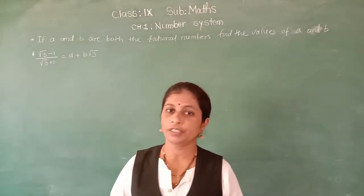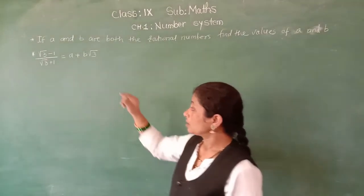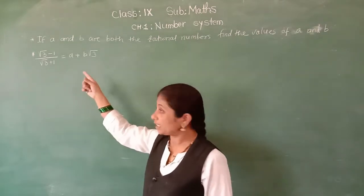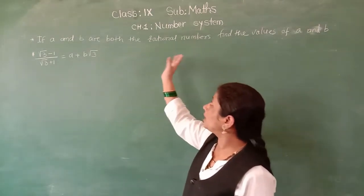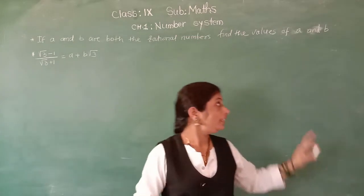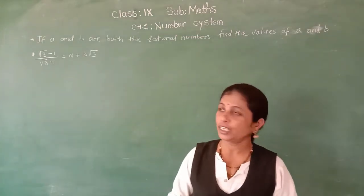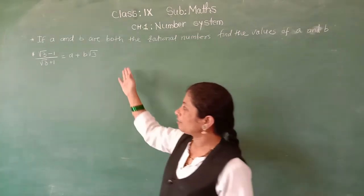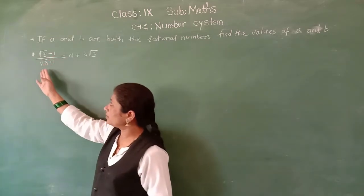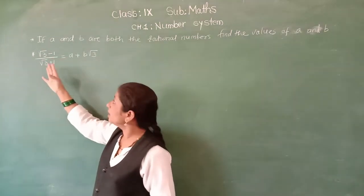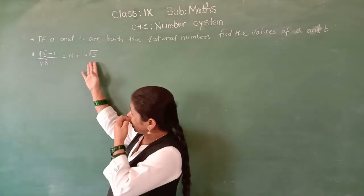Good morning students, today we are going to see today's next example. So here in this example, if A and B are both rational numbers, find the values of A and B. So here one example is: root 3 minus 1 upon root 3 plus 1 equals to A plus B root 3.